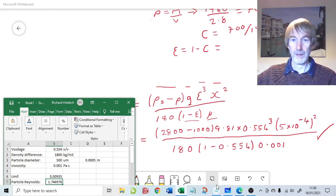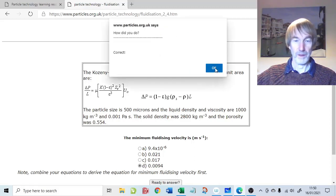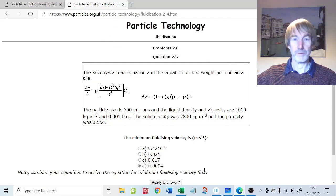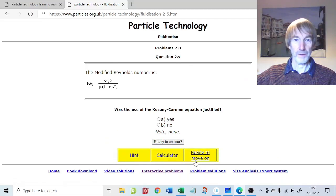So if we go back, that's answer D, 0.0094. Check that that answer is correct. It is, good, we've got the right value of minimum fluidizing velocity. Ready to move on? Yes.